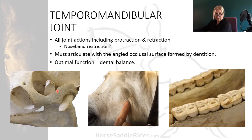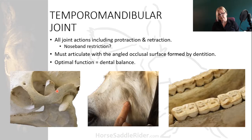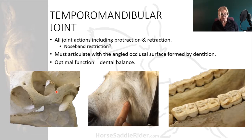This has implications for tight nosebands because they can restrict the whole jaw if the nosebands are very tight and the head moves into flexion for rhythm work. Optimal function is largely determined by optimal dental balance, and very often if there are restrictions through the TMJ and the teeth are floated or rasped competently, that will balance the TMJ joint.